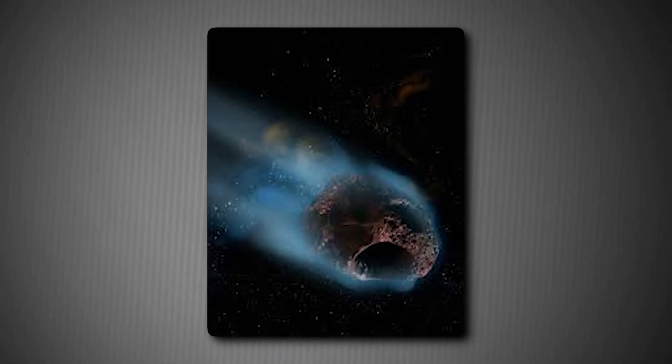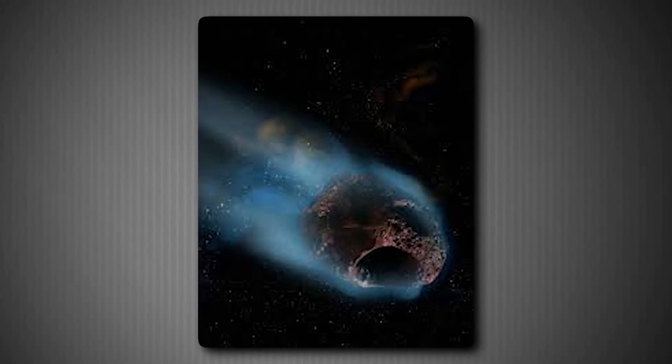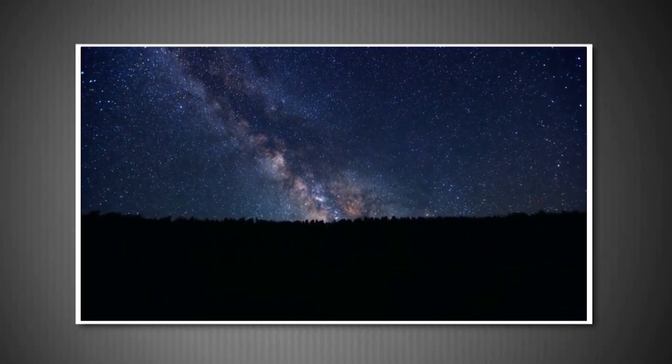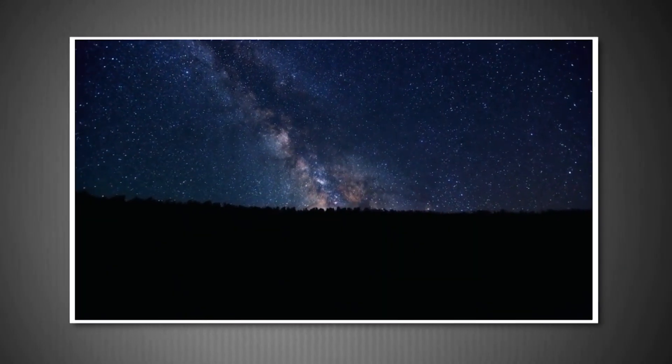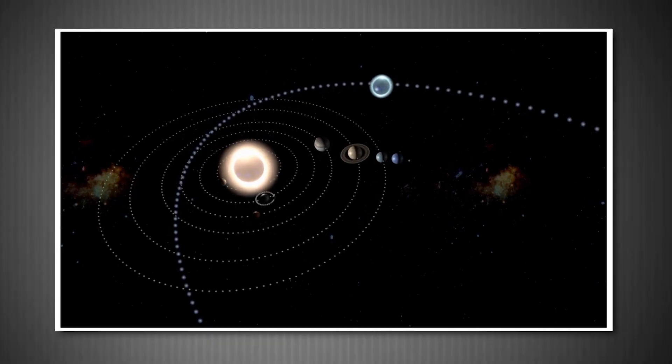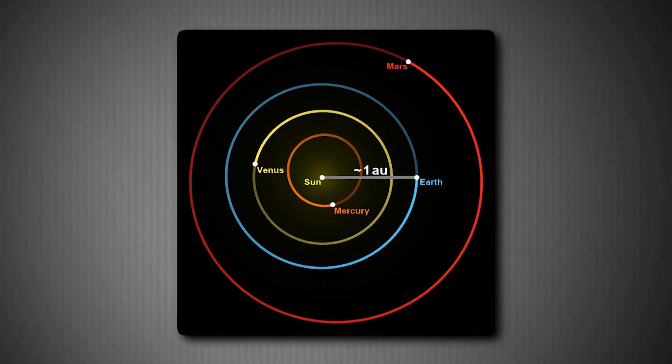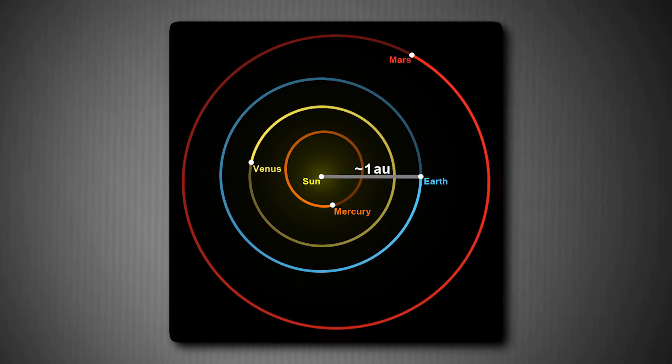Think about that for a moment. This chunk of ice and rock has been drifting through the cold darkness of interstellar space for potentially billions of years. And now, through an incredible cosmic coincidence, it's passing through our solar system at this exact moment in human history when we have the technology to observe it. The odds of this are astronomical. Literally.